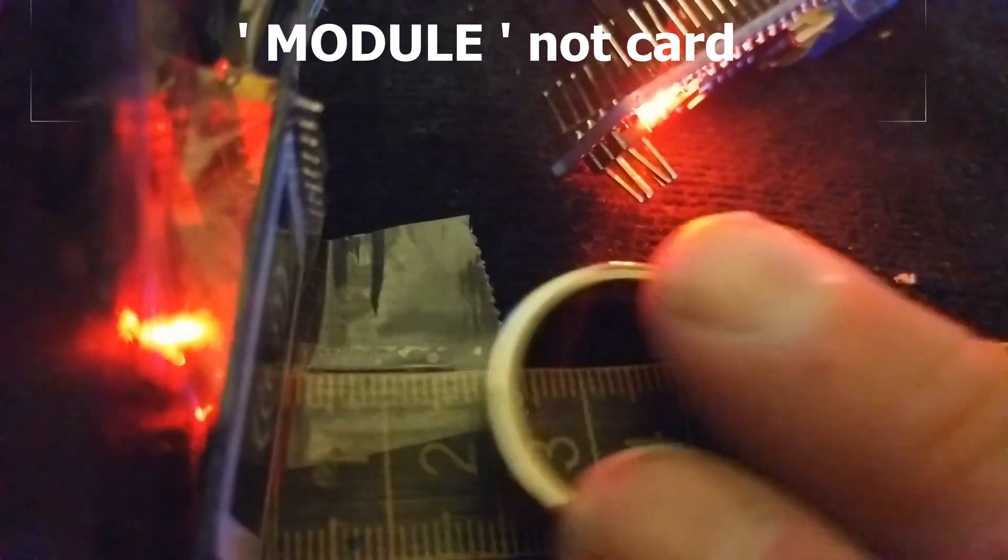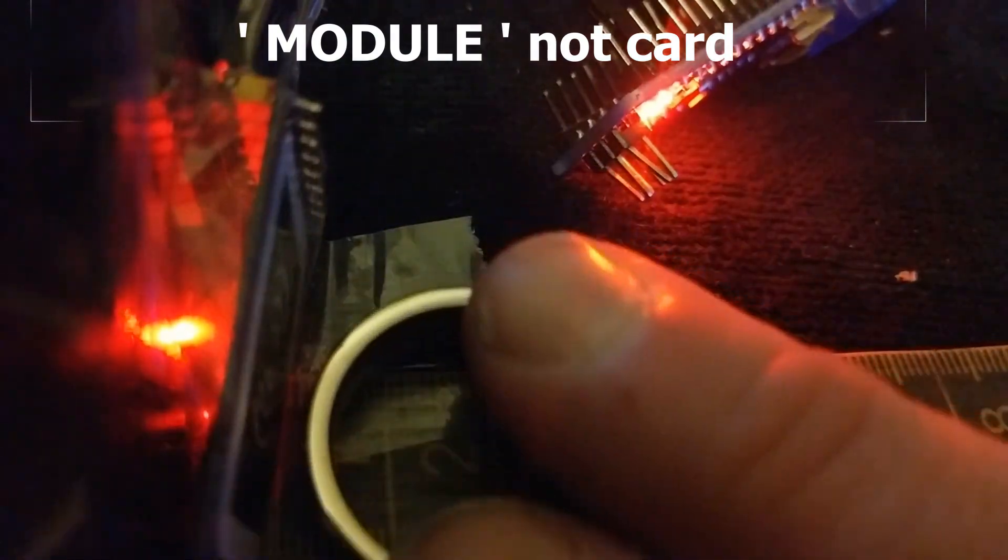But even then, as you can see with this card, even when you know where that spot is, you can only manage about 3-4mm. So you've got to be bang on the money to get this to work.